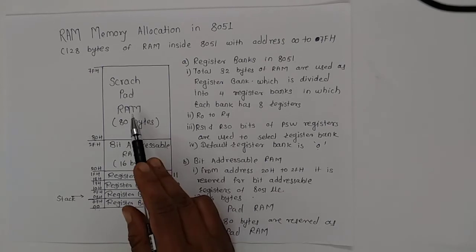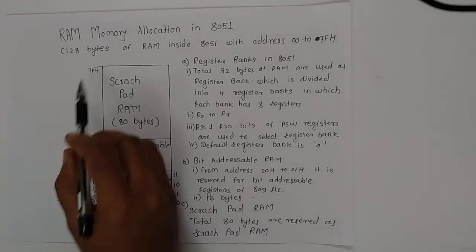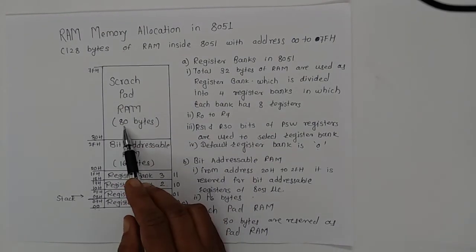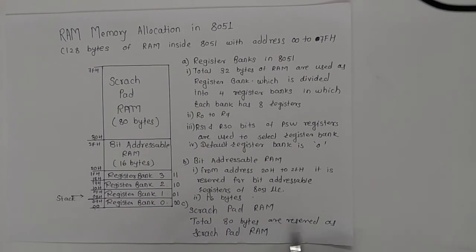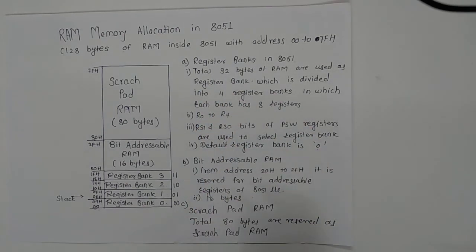The third part is scratchpad RAM, which has addresses from 30H to 7FH, totaling 80 bytes reserved as scratchpad RAM. This is all about the RAM allocation in 8051 microcontroller. Thank you and happy learning.